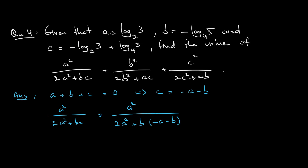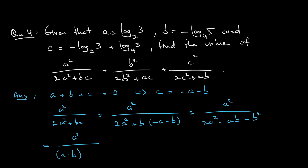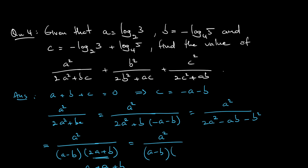Expanding the denominator: 2A² − AB − B², which factorizes as (A−B)(2A+B). Since A+B+C=0 means A+B = −C, I can write 2A+B = A + (A+B) = A − C. So the first fraction becomes A² / [(A−B)(A−C)]. Similarly, the second fraction becomes B² / [(B−A)(B−C)], and the third becomes C² / [(C−A)(C−B)].